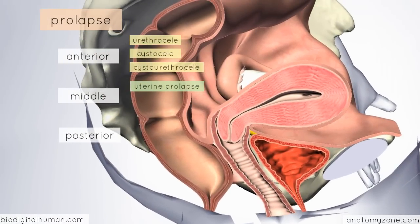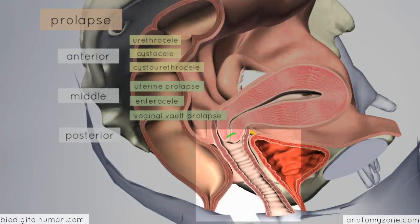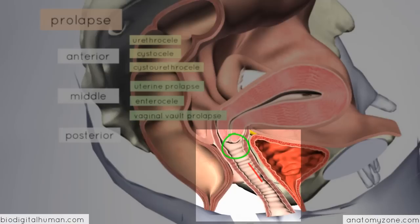Also in the middle compartment, just behind the uterus and posterior to the supravaginal region, you've got the pouch of Douglas — a pouch of peritoneum. When this herniates down, it's known as an enterocele, and it bulges into the posterior wall behind the uterus. Another type of middle compartment prolapse is the vaginal vault prolapse, which occurs after hysterectomy, where the superior end of the vagina prolapses and you get inversion of the vagina.